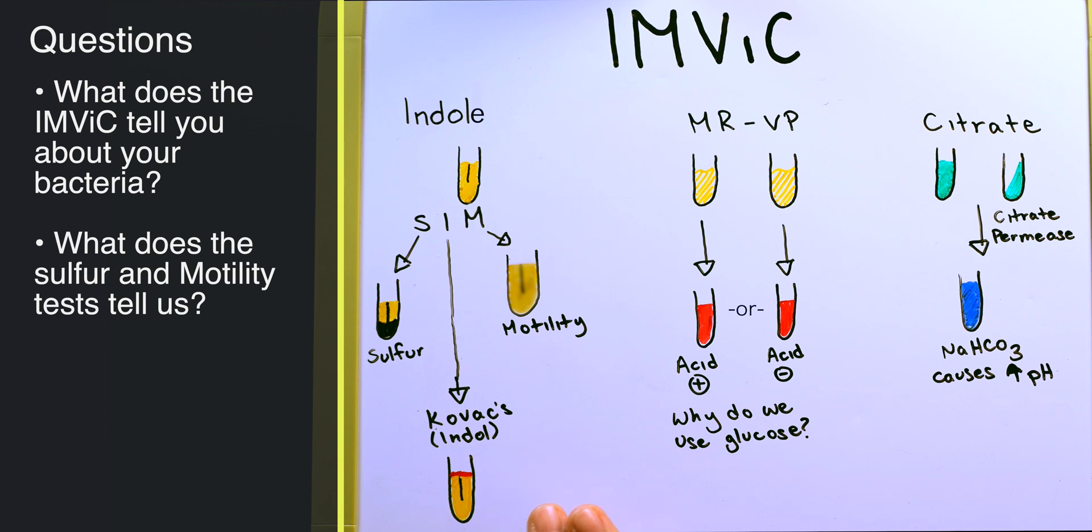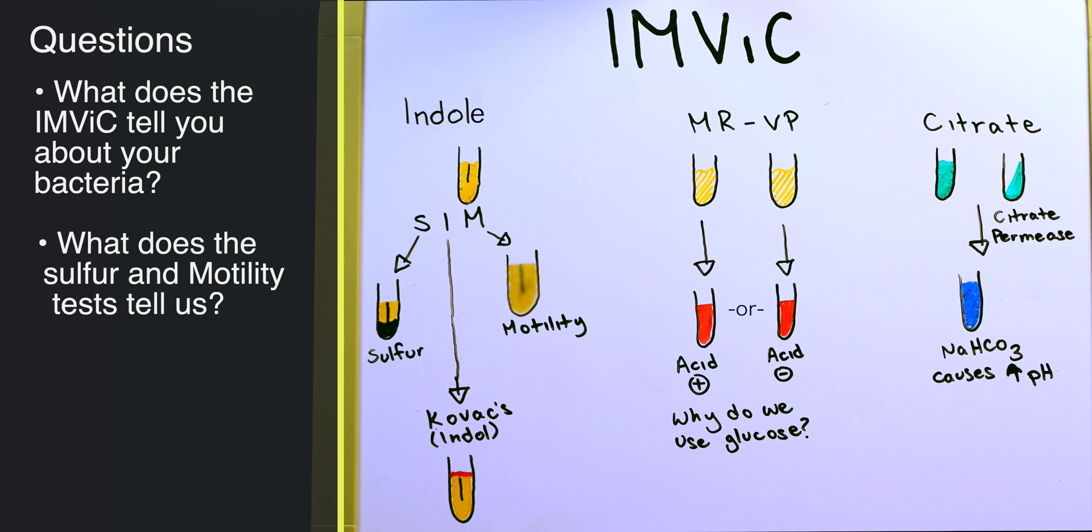Because we not only learned about the metabolic processes from these three tests, but because we use the SIM test, we learned two other things here as well. What does this tell us about our bacteria? And this is going to be very critical for you to determine the analysis of this bacteria because the IMVIC test is something that you're going to use when determining your unknown bacteria at the end of your quarter or semester.